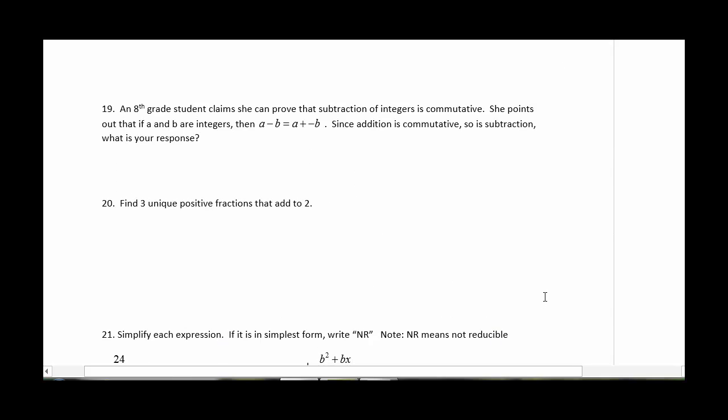Number 19. An 8th grade student claims she can prove subtraction of integers is commutative. She points out that if A and B are integers, then A minus B equals A plus negative B. Since addition is commutative, so is subtraction. What is your response? She claims that since you can switch the order when you add any two numbers, technically you can rewrite any subtraction as addition, so you should be able to do the same thing, right? What I'm looking for is that you understand what the student is saying and that you can come up with a reasonable explanation as to whether or not the student is correct.